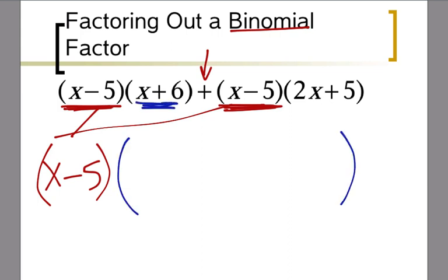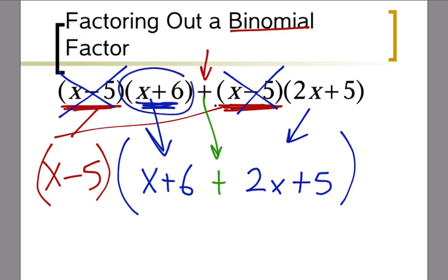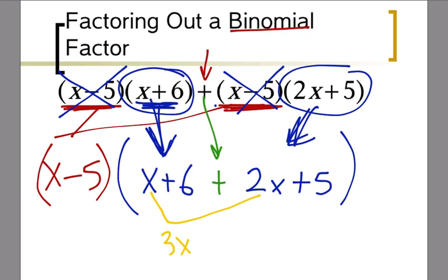If I pull out an x minus 5, I'm left with an x plus 6. Then I bring down my plus sign, and this one I cross out my x minus 5 because I divided it out, and I'm left with 2x plus 5 on the inside. So I'm left with x plus 6 on the first one and 2x plus 5 on the second one. Inside the parentheses, I simplify further: 2x and x gives me 3x, and plus 6 and 5 makes 11. So my answer is x minus 5 times 3x plus 11.